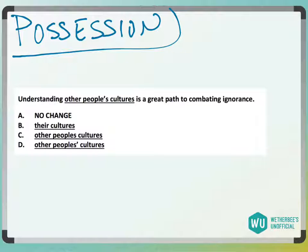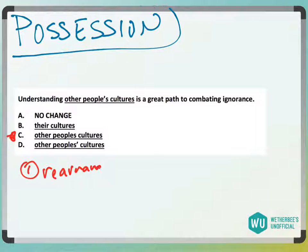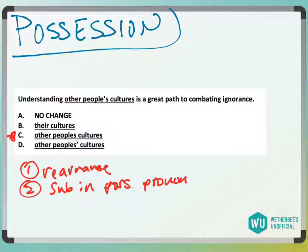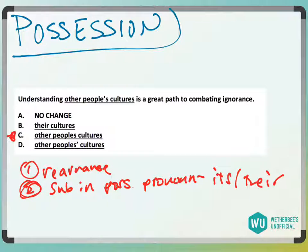This is a slightly more difficult possession question. When we do possessives, we want to check if something is possessive using two methods. One check is to rearrange the words. The other check is to substitute in a possessive pronoun — like its, their, his, or her. If we can sub one of these in and it sounds fine, it's possessive. If we can also rearrange the words, then yes, it's possessive. We'll try both.